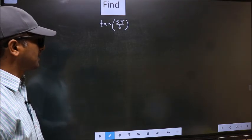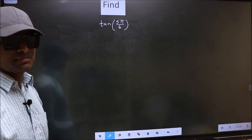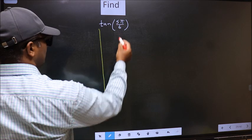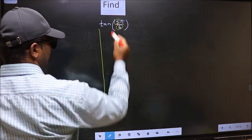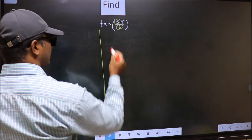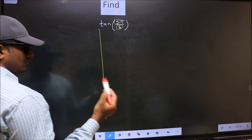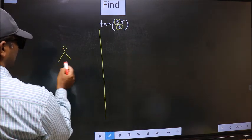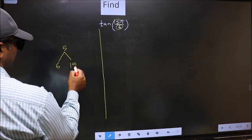Find tan(5π/6). To find this, we should follow this method. In the denominator we have 6, in the numerator 5. Now you should check: 5 is close to which multiple of 6? What I mean is, you should write multiples of 6, that is 6 and 12.